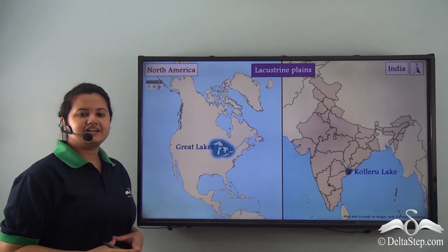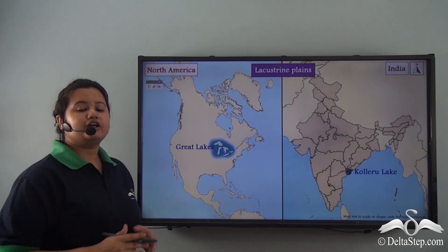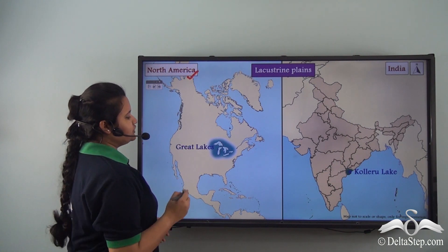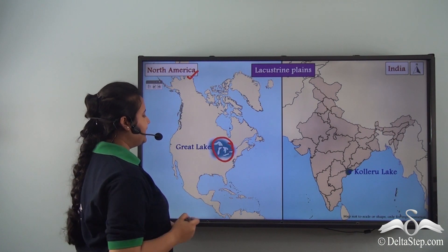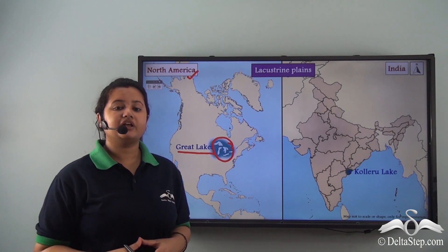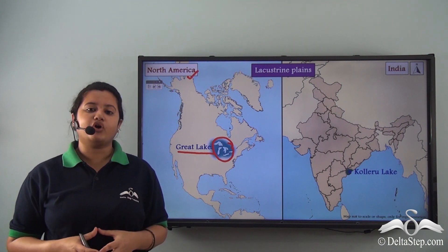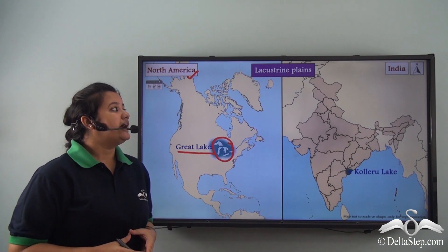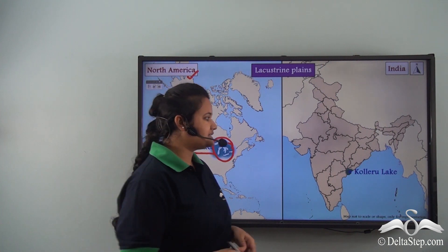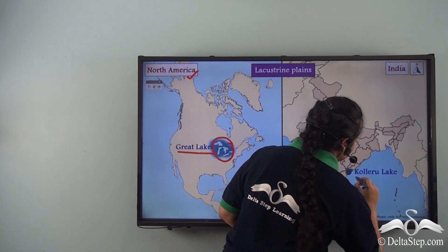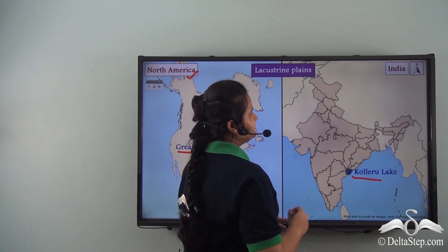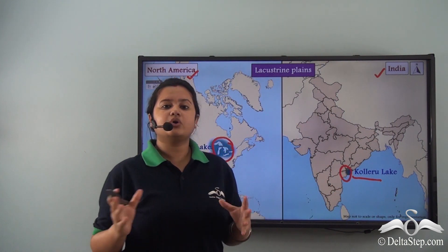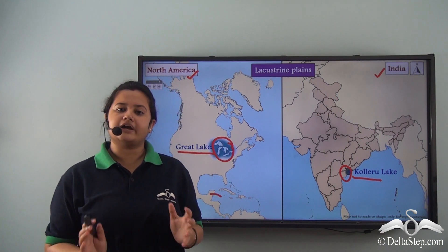Now let us discuss a few examples of lacustrine plains. The first example is the plains present in North America — the region drained by the Great Lakes is an example of a lacustrine plain, formed due to accumulation of sediments in the Great Lakes. Another example is the plain surrounding Kuleru Lake in India, which is also a lacustrine plain.